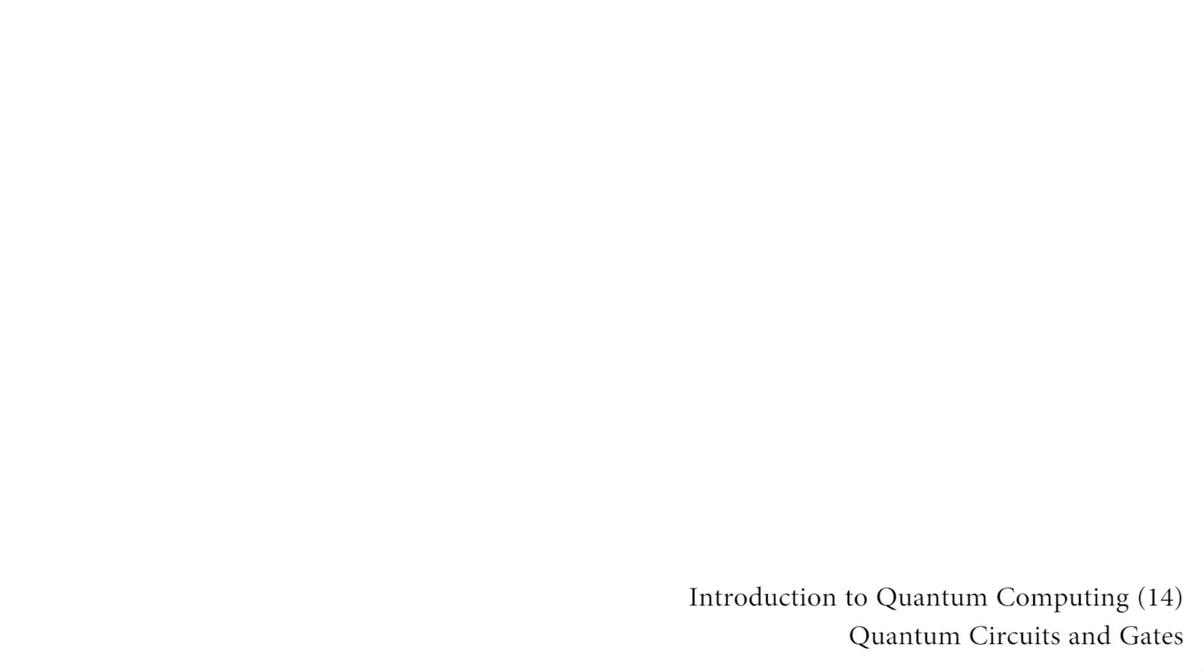We're finally ready to discuss quantum computing, specifically the quantum circuit model of quantum computation. A quantum circuit is a series of quantum gates, each of which usually acts on only one or two qubits at a time, followed by a measurement. The basis state of the system collapses to is the result of the computation and ideally tells you something useful.